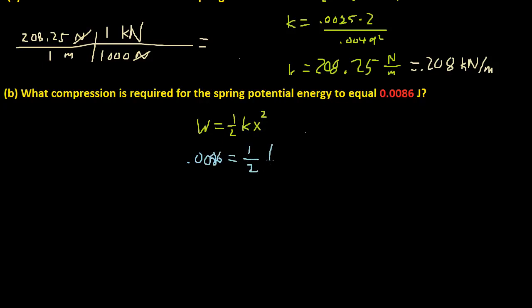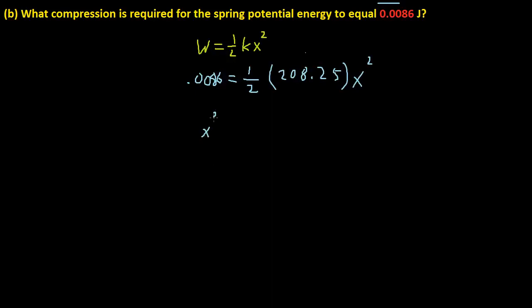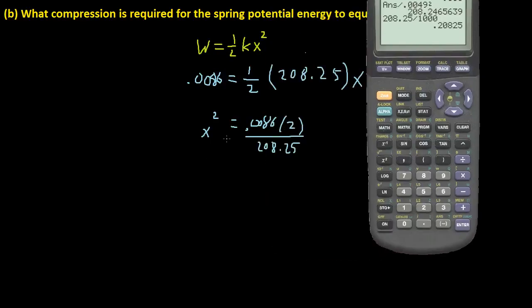So 0.0086 joules is our work, our potential energy. And that is equal to our k, which is 208.25 newtons per meter. We're going to use newtons per meter because kilonewtons per meter is not an SI unit, but newtons per meter is. So times x squared. And now we just solve for x squared. So x squared is equal to 0.0086 times 2, divided by 208.25. And then we just take the square root of each side to get x.